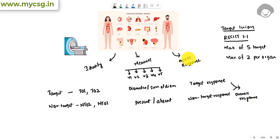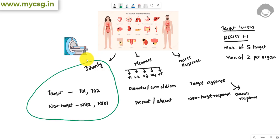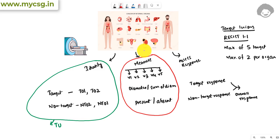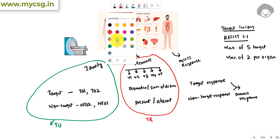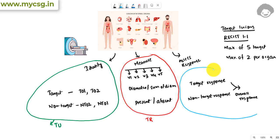There are three SDTM domains to store the relevant information of identification, measurement, and response. The first is tumor identification — the TU domain. The second domain stores the measurements of the tumors — that is the TR domain. The third domain stores the responses — that is the RS domain.